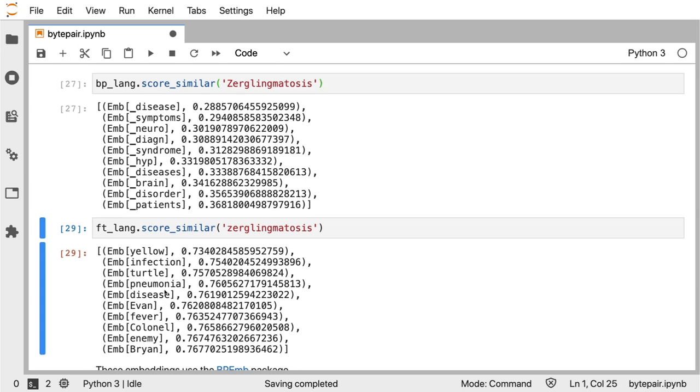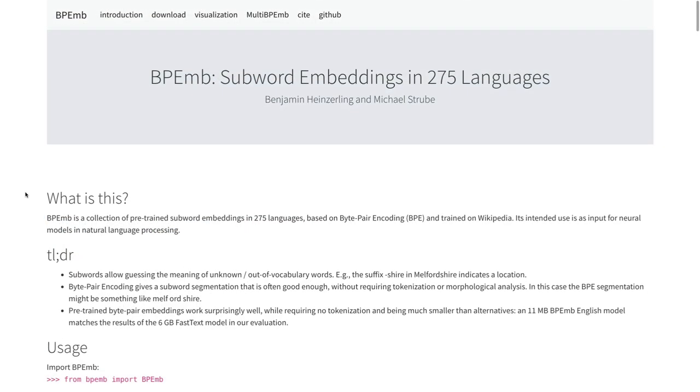Now I hope that this example is intriguing to you and you might be asking, well how can I explore these byte pair embeddings further. Well first of all they are implemented inside of what lies, so you can already play with that.